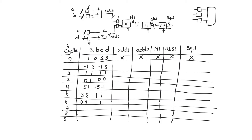They will cross these registers on the first clock edge. So on cycle one, values one, zero, two, and three will cross these registers. They will then become available as inputs to the two adders, and the adders will calculate their sums. Therefore, at the end of the first cycle, at points add one and add two, we will have the summation of one plus zero, which gives us one, and the summation of two plus three, which gives us five.